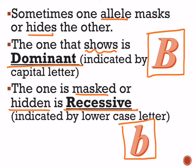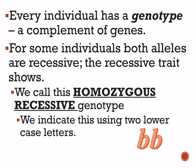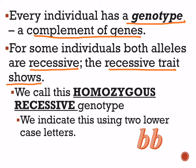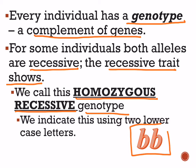The recessive allele is indicated using the same letter but in lowercase. Usually the letter you choose is the first letter of the trait you're looking at. Another vocabulary term is genotype. The genotype of an individual is their complement of genes — what letters and genes they have. For some individuals, both alleles are recessive, so the recessive trait shows and is not being hidden by the dominant trait. We call this a homozygous recessive genotype, indicated by two lowercase letters.